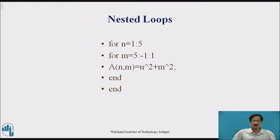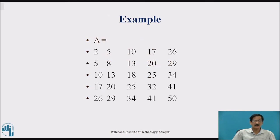Once m goes from 5 to 1, n changes from 1 to 2. Similarly, n goes on changing from 1, 2, 3, 4, 5. In between each change of n, m is executed 5 times taking values from 5, 4, 3, 2, 1. The result is a 5 by 5 matrix where each element a(n, m) equals n squared plus m squared.